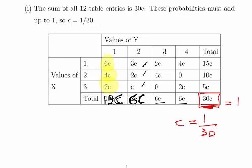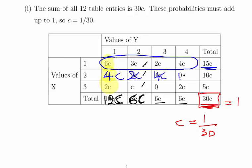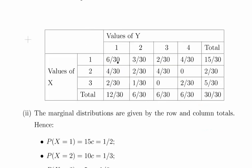Now we can do it for the rows as well. So 6c plus 3c plus 2c plus 4c gives us 15c. 4c plus 2c plus 4c plus 0 gives us 10c, and so on. And we get 5c here. Again if you add all that up you should get 30c and that is equal to 1, so that just double checks it. So essentially what I'm going to do here is just tidy that all up.